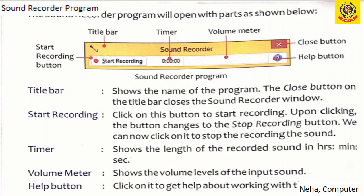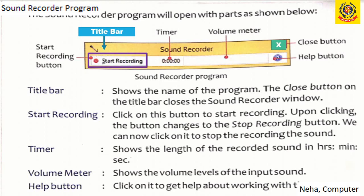Now let's see the parts of the Sound Recorder program. First is the title bar, which shows the name of the program. When we have saved a sound audio, it shows its name in the title bar. Next is the close button, shown as X — clicking it will close the Sound Recorder window. Next is the start recording button; when we click it, the recording will start.